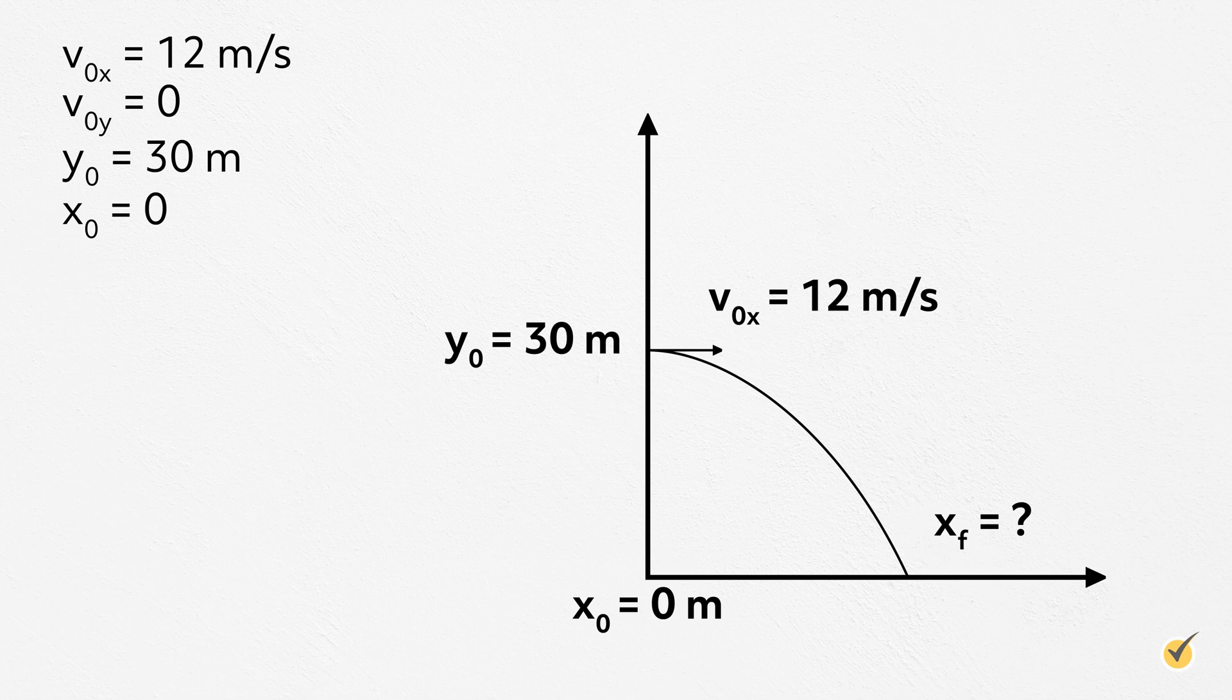We also know that y0 equals 30 meters and we'll set x0 to equal 0. As with most projectile motion problems, gravity is the only force we need to worry about, so the only acceleration is g equals negative 9.8 meters per second squared. Remember, this is only in the y direction and only after the ball is over the cliff. So ay equals negative 9.8 meters per second squared, which is 0 in the x direction.